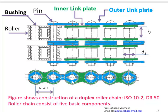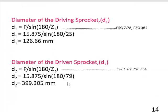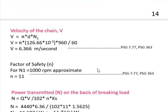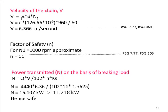The diameter of the driving sprocket d1 is calculated using the formula from design data book 7.78. Substituting Z1, it comes to 126.66 mm. Similarly, substituting Z2 gives the diameter of the driven sprocket. The chain velocity V is calculated using the formula V = π × d × n, divided by 60 to convert to meters per second. Substituting d and n1 = 960 RPM, the velocity is 6.36 m/s.